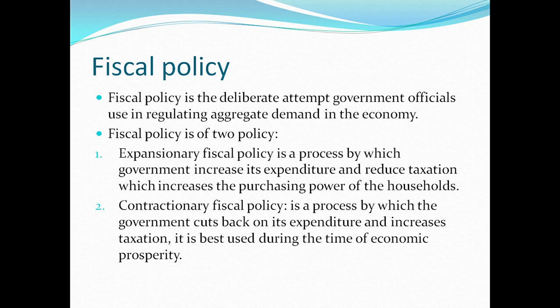A reduction in taxation also increases aggregate demand. For contractionary fiscal policy, the government cuts back on its expenditure and increases taxation in order to reduce aggregate demand and reduce the purchasing power of households. Reducing expenditure is expected to cause a multiplier effect on the economy, and increasing taxation means consumer spending also reduces, so aggregate demand falls.